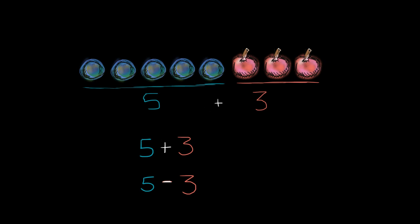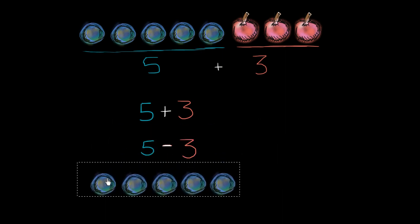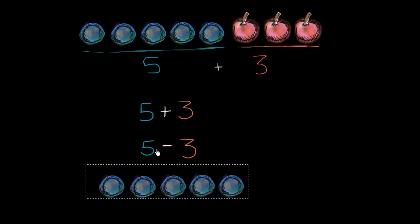If you did five minus three, that would be starting with your blueberries. So let me make sure I can copy and paste or redraw the blueberries here. So five minus three would have been starting with the five blueberries and then taking away three. So you take away one, two, three.